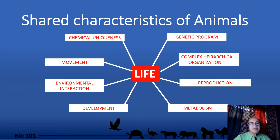Animals have characteristics that they share with all other life forms on Earth. These include chemical uniqueness, genetic program, complex hierarchical organization, reproduction, metabolism, development, environmental interaction, and movement.